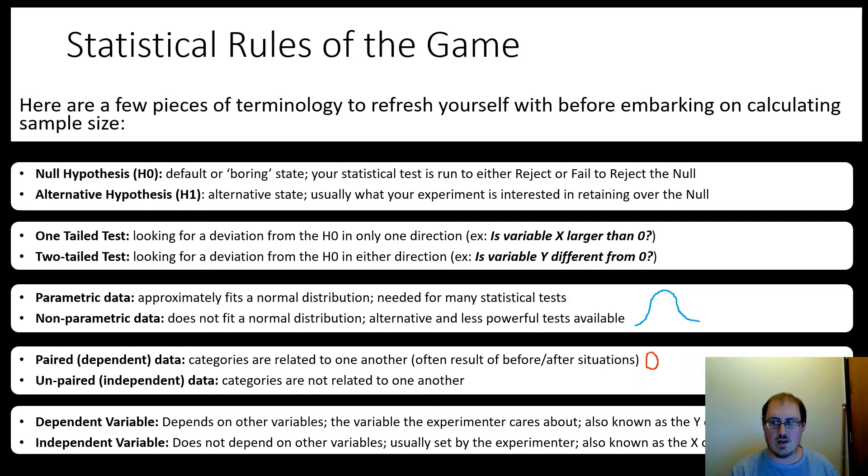You make a measurement before a surgery, and then you make another measurement after the surgery. That's paired. These points are not independent of each other. Whereas unpaired, they're not related. You don't have to take that into account.